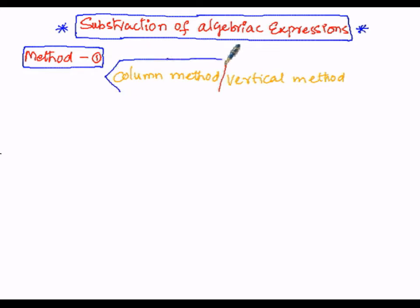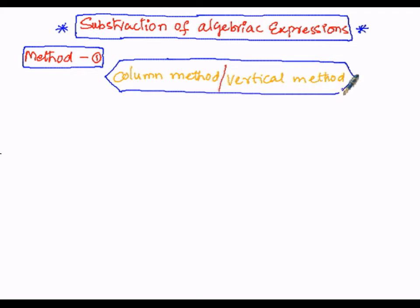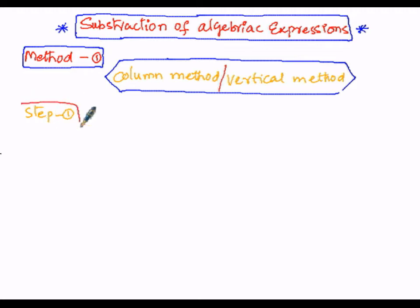Now we are going to learn the procedure for subtraction of two algebraic expressions using the column method in a step-wise manner. Let us write all the steps. Step number one: we should arrange the terms of the given expressions in the same order.